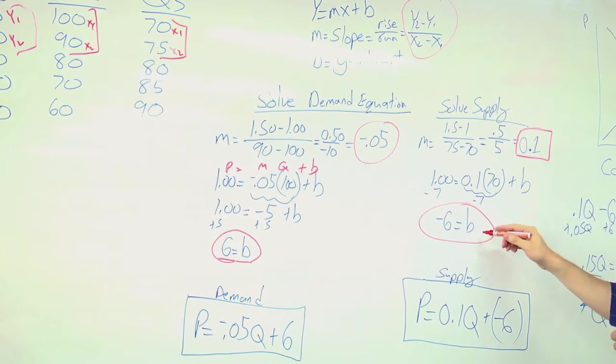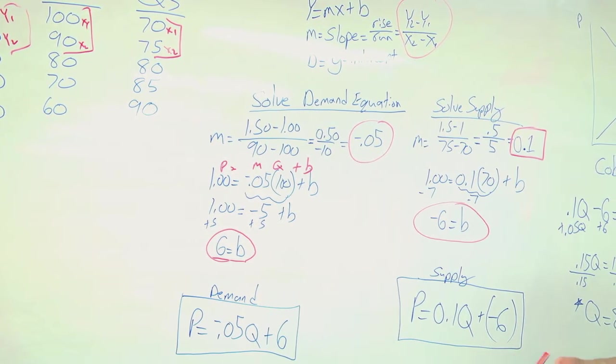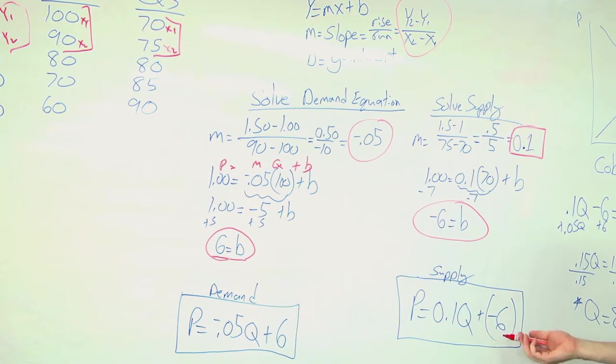Now that I have my m and my b, I plug that into my supply equation. So I have a p equals 0.1q plus the negative 6.